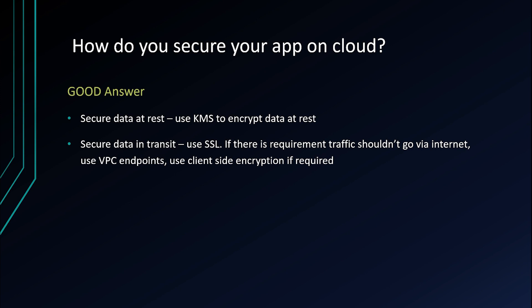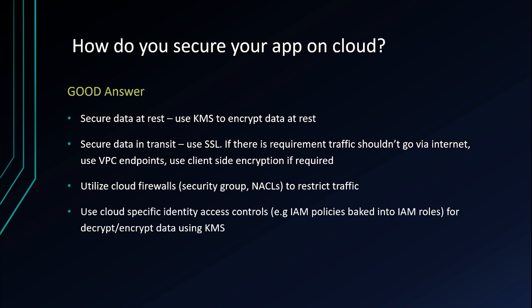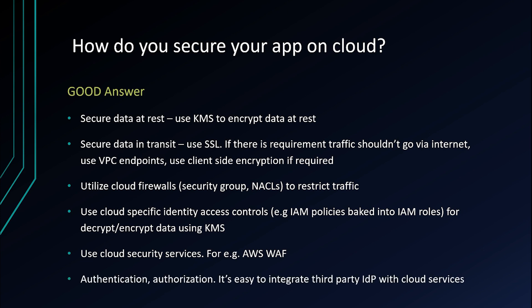Also talk about cloud firewalls such as security groups and access control lists. Use cloud-specific identity access controls such as IAM policies backed into IAM roles for encrypt/decrypt operations using KMS, and IAM policies to control who has access to services. Use cloud security services — for example, AWS Web Application Firewall for DDoS protection and additional header checks. Mention that authentication and authorization should also be implemented, and note that it is easy to integrate third-party identity providers with cloud services — for example, if you already have your user base in Okta or Auth0, you can easily integrate that with a load balancer or API gateway.